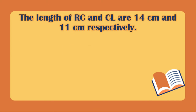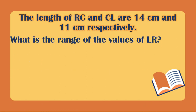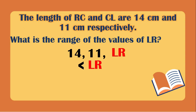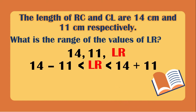Let's have the next example. The lengths of RC and CL are 14 cm and 11 cm respectively. We need to find the range of values of LR, which is the missing third side. LR must be greater than the difference of the two sides, which is 14 minus 11 equals 3, and less than the sum of the two sides, which is 14 plus 11 equals 25. So LR is greater than 3 but less than 25.